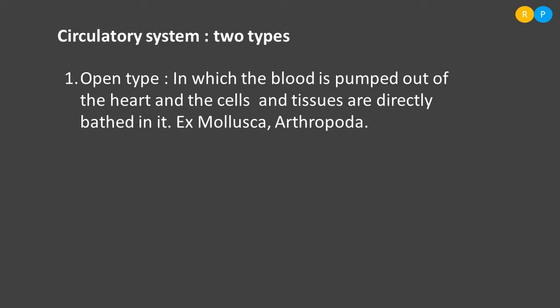Some primitive animals show open type of circulatory system — best examples are Mollusca and Arthropoda. The cockroach, for example, has an open circulatory system, meaning the heart is not connected to any blood vessels. When the heart pumps blood, it directly falls on all cells and tissues. There is no separate channel for circulating blood; the blood is pumped directly into the body cavity, called the coelom. Due to the absence of blood vessels, this is called the open type of circulatory system.